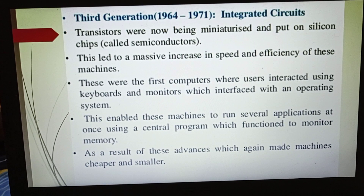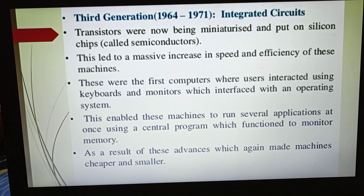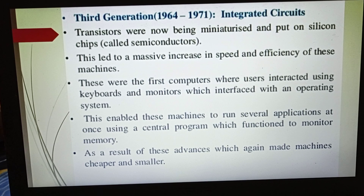Third generation computers were from the era of 1964 to 1974. Transistors were now being miniaturized and put on silicon chips, which are semiconductors. This led to a massive increase in speed, accuracy, and efficiency. These were the first computers where users interacted using keyboard and monitors, which interfaced with an operating system. Several applications could run at a time using a central program to monitor memory, making these machines cheaper and smaller.